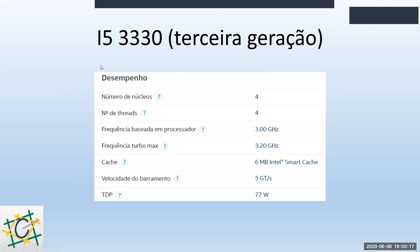Aqui vamos ter alguns exemplos tirados do site da Intel. O processador i5 modelo 3330 é de terceira geração, vem com quatro núcleos físicos. As gerações iniciais do i5 já têm o dobro de núcleos físicos das gerações iniciais do i3. Ele vem com 3 GHz de frequência, podendo chegar a 3.2 GHz com o turbo, e já saiu com 6 MB de cache — tem uma velocidade bem melhor e uma quantidade maior de memória cache, representando bastante diferença de velocidade no uso prático.